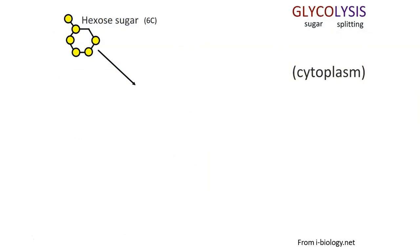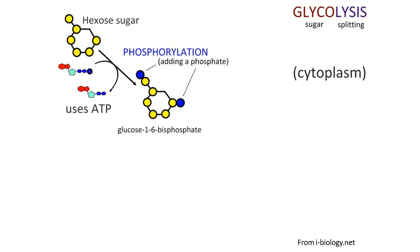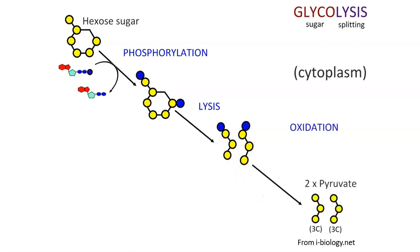This is a step-by-step diagram of glycolysis starting from hexose sugar, which happens in the cytoplasm. The next step is phosphorylation — adding phosphate molecules to glucose to give glucose-6-phosphate. Energy is required here, as ATP is used for phosphorylation. Then lysis occurs: the phosphorylated glucose is split into two 3-carbon molecules because phosphorylation makes the molecule unstable.